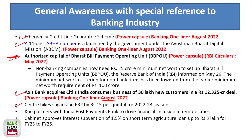Due to the prices of sugarcane, there was a farmer protest, and that topic made it into the exam. Koo — a Twitter clone from India — was in the news, so anything related to Koo was in the exam. Cabinet approved the interest subvention of 1.5% on short-term credit loans, and that was in the news as well.